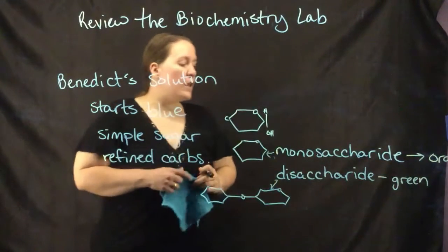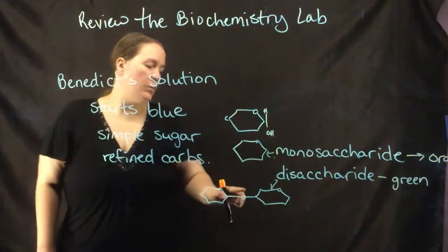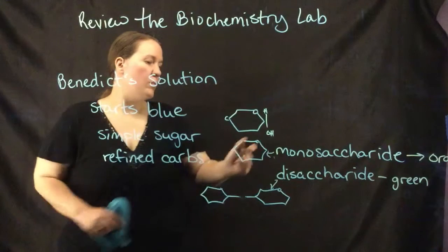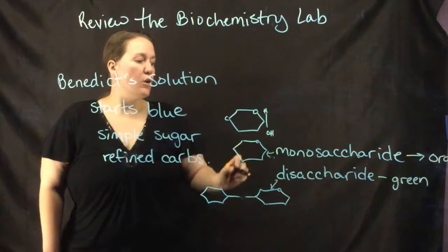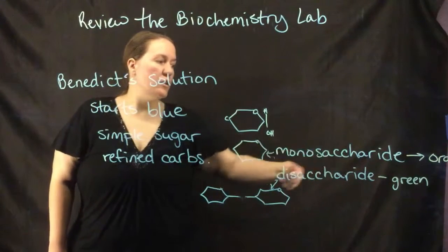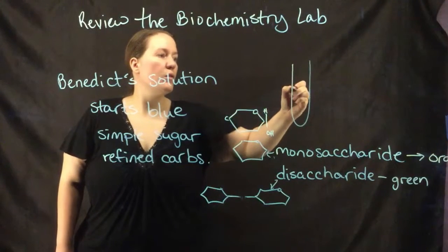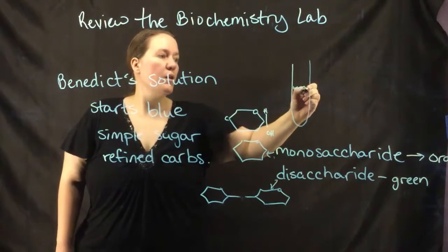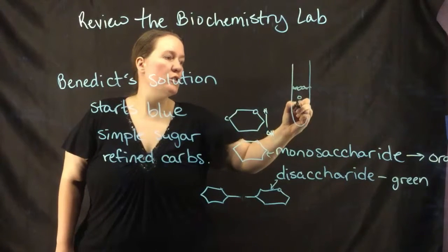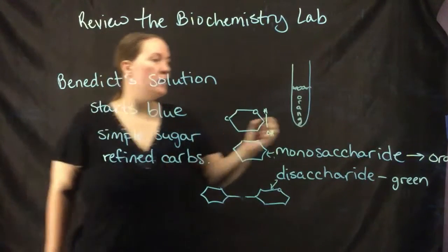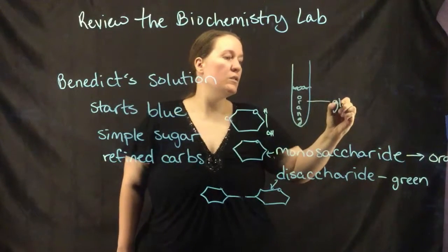Now if you heat up disaccharides, sometimes you can break this bond and go to a simple monosaccharide structure. You almost never see just green - it's just like a little bit of green at the top and then the rest is going to be orange, and that is a positive result.